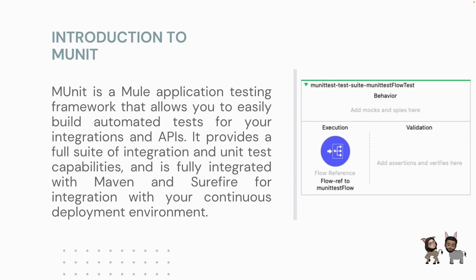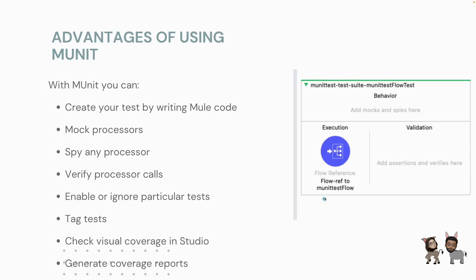Yes, for your CI/CD strategy you can also implement MUnit. Let's discuss some of the advantages of using MUnit. With MUnit you can create your tests by writing Mule code within Anypoint Studio. You can mock processors — for example, if you would like to mock a DB processor in the flow you can simply do that using a mock processor. After that you can use spy on any processor to see the input and output going through that particular processor. You can also verify processor calls, enable or ignore particular tests, and use tag tests for tagging your particular tests for any flow.